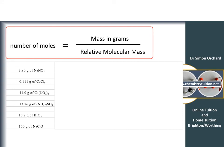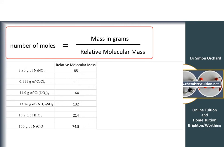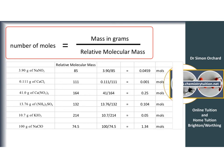The same approach works for molecules and compounds, using relative molecular mass instead of relative atomic mass. Working out the relative molecular masses: NaNO₃ = 85, CaCl₂ = 111, Ca(NO₃)₂ = 164, ammonium sulfate = 132, potassium iodate = 214, sodium chlorate = 74.5. Dividing each given mass by the relative molecular mass gives: 0.0459, 0.001, 0.25, 0.104, 0.05, and 1.34 moles respectively.